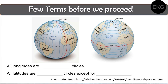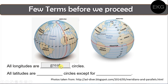To make it easier to understand great circles and small circles, we have an illustration showing longitudinal lines and latitudes. All longitudes are great circles. For the latitudes: all latitudes are small circles, except for the equator, since the equator is a great circle.